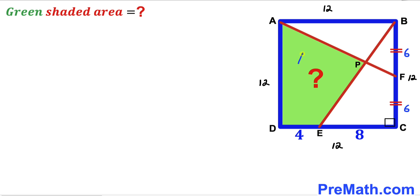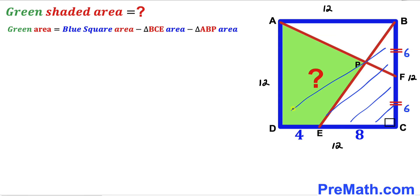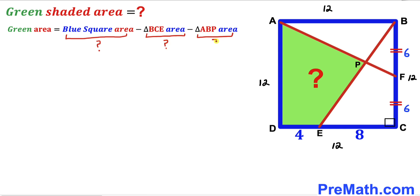Since we want the area of the green shaded region, the green shaded area equals the area of the blue square minus the area of triangle BCE minus the area of triangle ABP. We need to calculate all three of those areas before we can find the green shaded region.